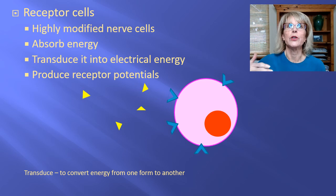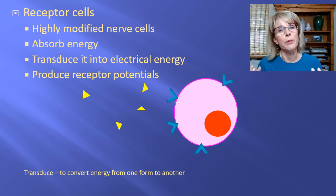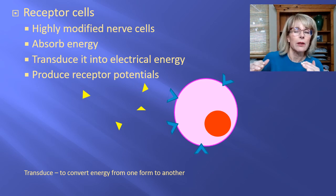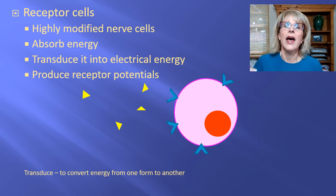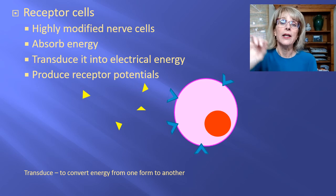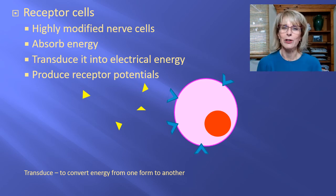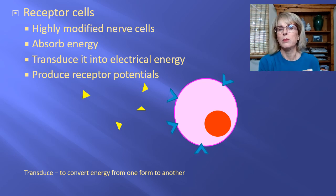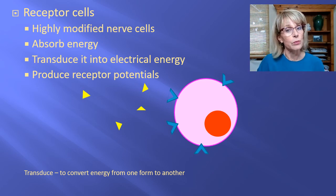Sensory receptor cells fall into a number of different categories. On a theoretical level, any form of energy that's in the universe is something theoretically that an organism would be able to sense, as long as they had a nerve cell that was modified specifically to transduce that particular energy. Transducing energy is taking the energy from one form, like the form of a chemical, and turning it into a different form, like the form of an action potential.